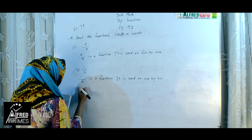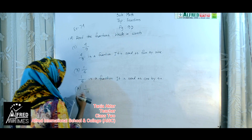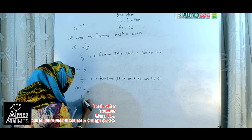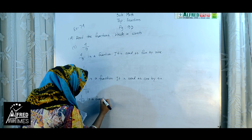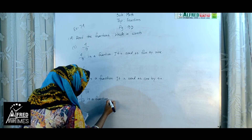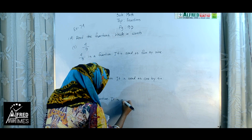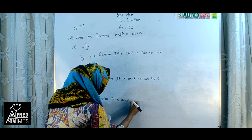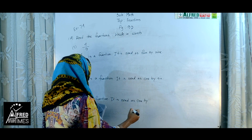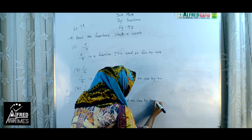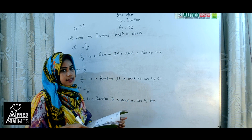Number 16: 1 by 10. 1 by 10 is a fraction. It is read as 1 by 10. I am showing 3 examples here and the remaining ones you will practice at your home.